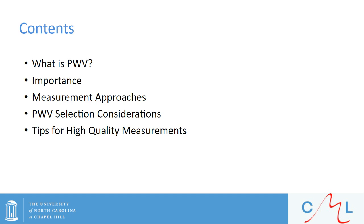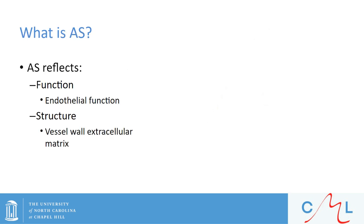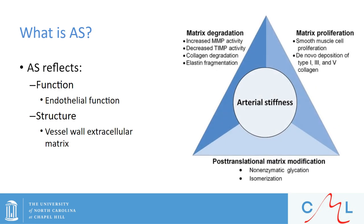Next, we are going to look at the importance of this measure. We will briefly touch on why arterial stiffness is important, then take a step back and look at the vascular system as a whole, and then look at clinical significance. Arterial stiffness is a construct which is dependent on the functional and structural characteristics of a vessel. It has been shown that acute changes in endothelial function influence arterial stiffness. Structurally, arterial stiffness is dependent on the vessel wall matrix, including the composition of elastin and collagen.